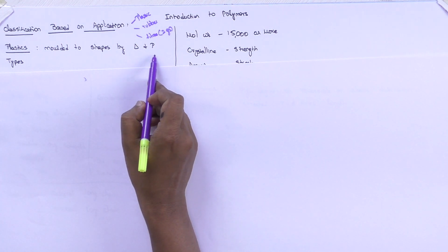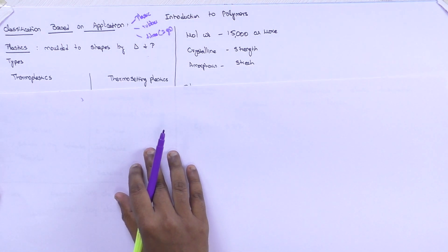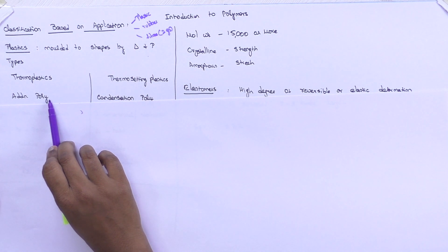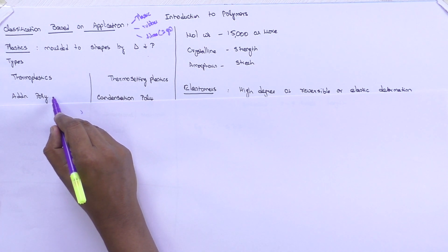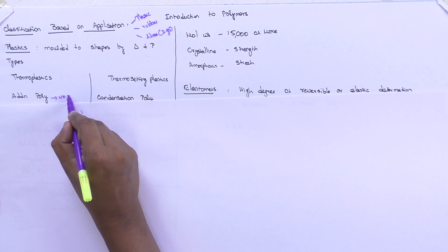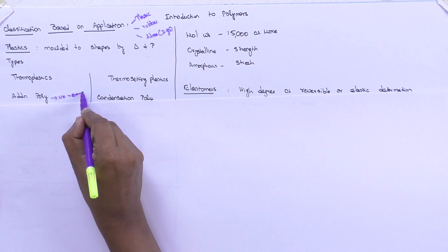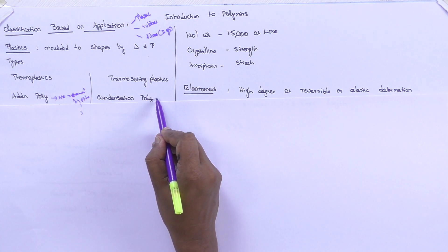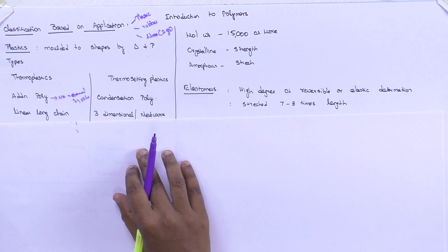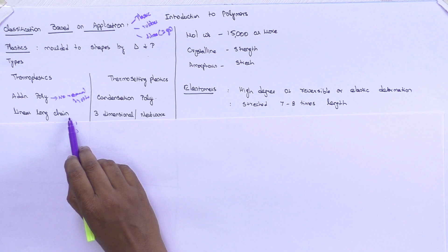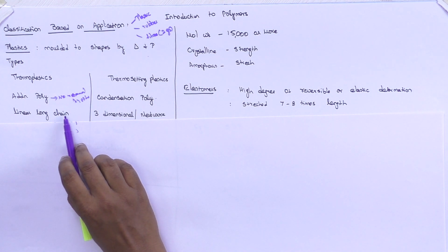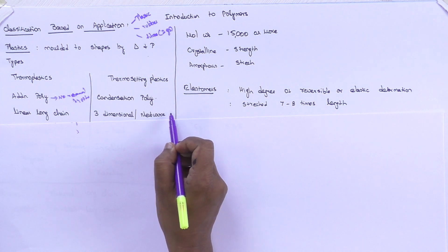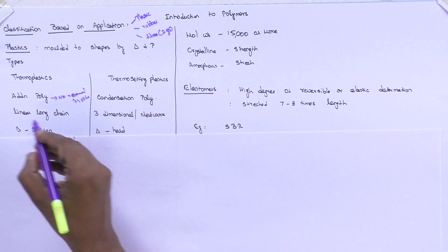Plastics can be molded into shapes by heating and by applying pressure. You have two types of plastics: thermoplastics and thermosetting plastics. Thermoplastics are formed by addition polymerization — there will be no removal of byproducts. Thermosetting plastics are formed by condensation polymerization — there will be byproducts. Thermoplastics are linear long chain polymers, similar to nylon and cotton. Thermosetting plastics have a three-dimensional network polymer structure, similar to bakelite and urea-formaldehyde resins.